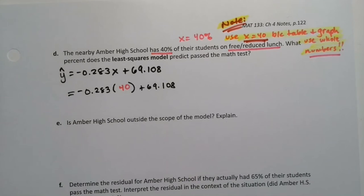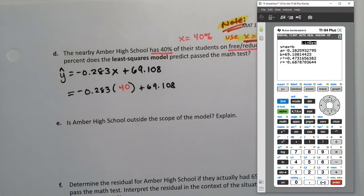So negative 0.283 times 40 plus 69.108 because that table was full of whole numbers, not decimals. And so then I would just grab a calculator. The calculator is actually a little tricky because it's a negative in front. You have to use the little negative sign. So negative 0.283 and then you can either use times or you can use parentheses because parentheses is multiplication in this instance.